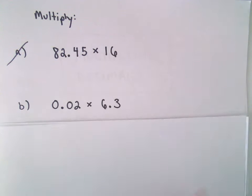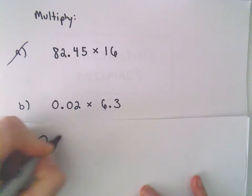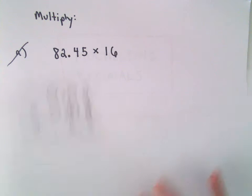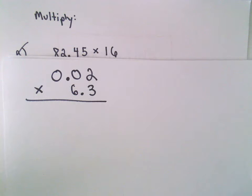So I'll just write it in the order that it is: 0.02 times 6.3. Notice when I'm multiplying, I don't really care about lining up the decimals. To me, it doesn't matter.